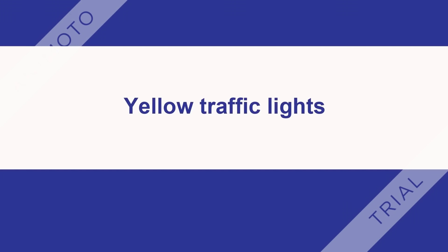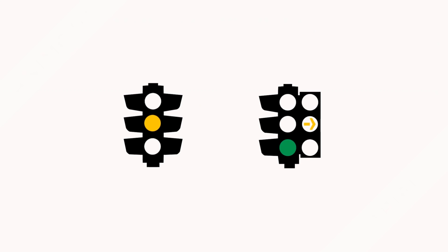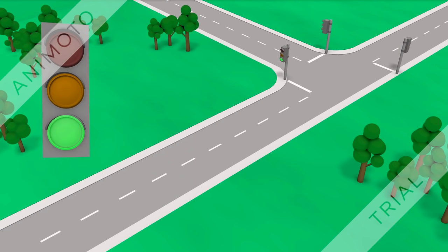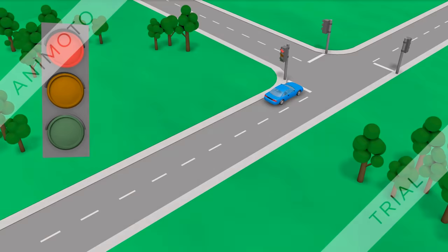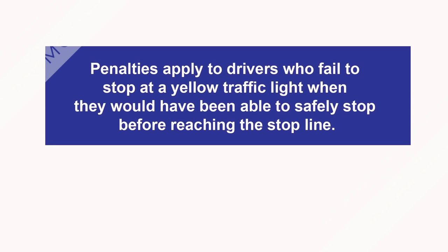Yellow traffic lights: a yellow traffic light or arrow means stop. When you approach a yellow traffic light, you must stop if you can stop safely before reaching the stop line or traffic lights. Penalties apply to drivers who fail to stop at a yellow traffic light when they would have been able to safely stop before reaching the stop line.